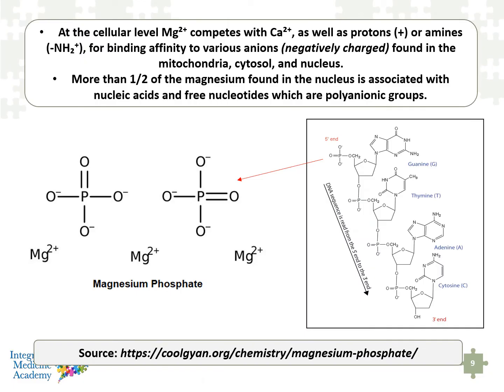What does this mean functionally at the cellular level and within the mitochondria? Cellular magnesium competes with calcium, as well as other protons carrying a plus-1 charge, or an amine that carries a plus charge — a nitrogen with hydrogens. Magnesium will outcompete these with preferential binding to what are called anions — something carrying a negative charge — found in our mitochondria, in the nucleus of our cells, and in the cytosolic fluid of our cells.